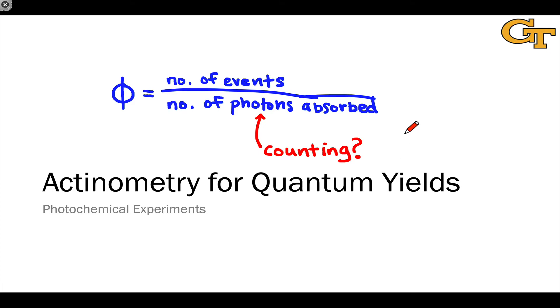How do we count the number of photons absorbed by the sample? We can use absorbance to do that if we know the initial photon flux through the sample, but how do we count the number of photons impinging on the sample in the first place? That's the subject of this video.